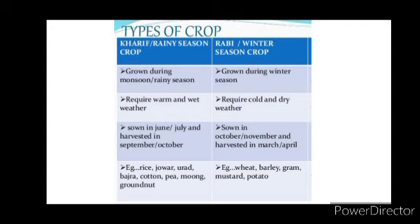Some examples of Kharif crops are rice, jowar, urad, bajra, cotton, peas, moong, groundnut, etc.